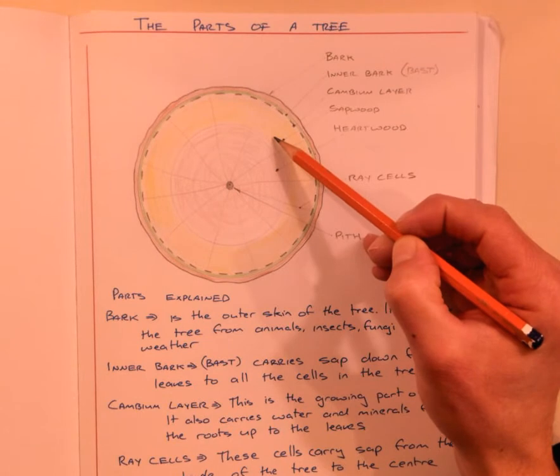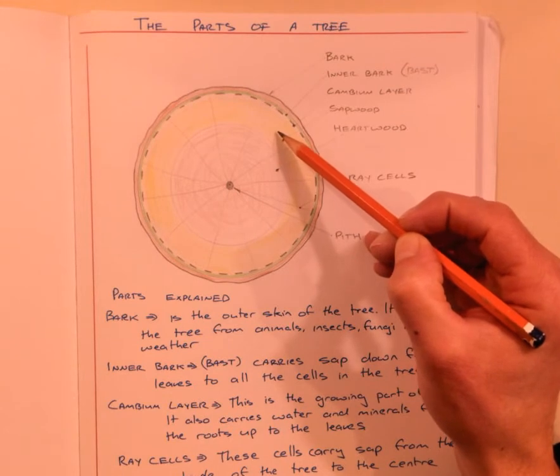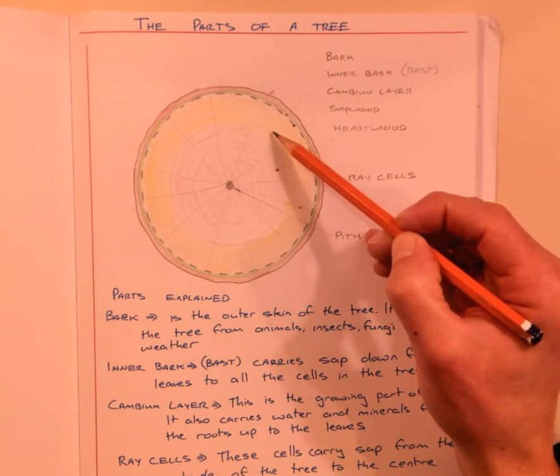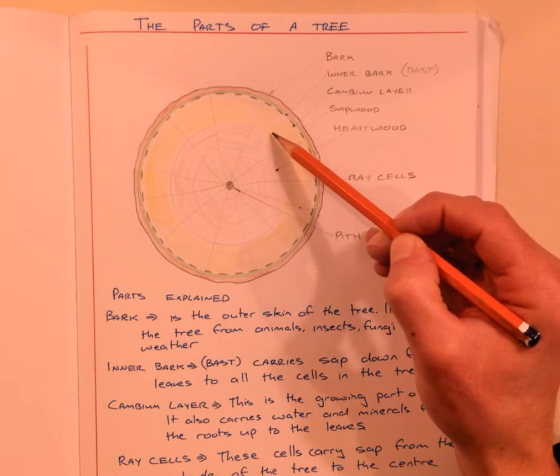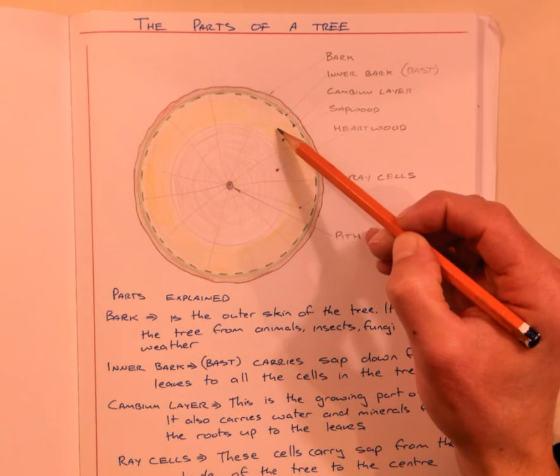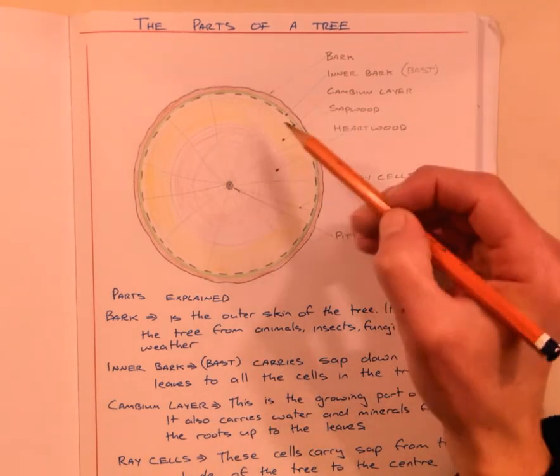Moving out past that, the yellow section here is the sapwood. The sapwood is the younger timber that has grown in recent years. It's lighter in color, softer, very moist with a lot of moisture in it, and this is the timber that gets attacked by insects and fungus if they get to the tree.